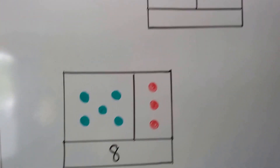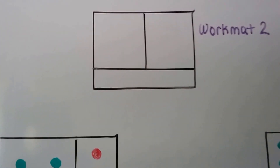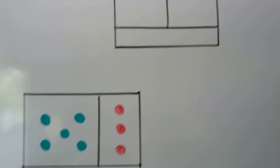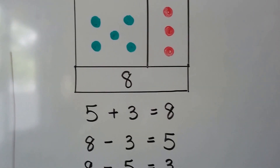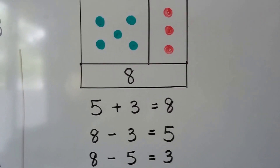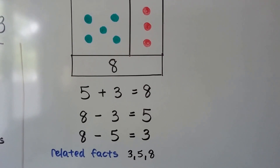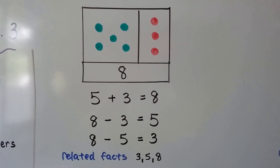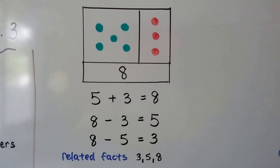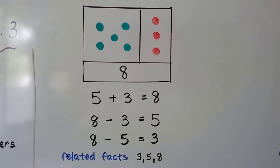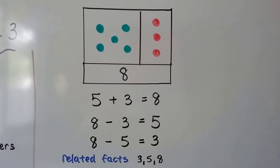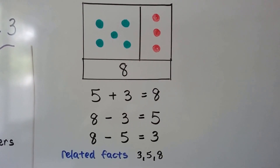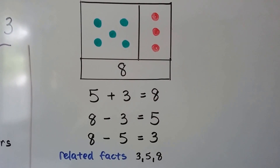Now you might want to make yourself a cardboard workmat that looks like this. Then you can put counters in it, like I did. We have 5 green dots and 3 red dots — there are 8 dots all together. 5 plus 3 equals 8, and 8 take away 3 would be the 5 green dots. And if we had 8 and took away the 5 green dots, we'd have the 3 red dots. The related facts are 3, 5, and 8.